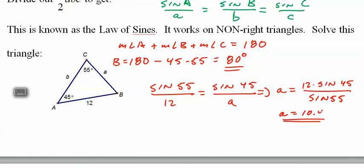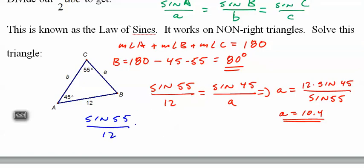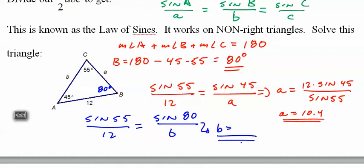I get A equals 10.4. For the last side B, we use sine of 55° over 12 equals sine of 80° over B, giving B equals 12 times sine of 80° divided by sine of 55°. I'd love to show you how to use a calculator on this, but we're a little time-constrained.